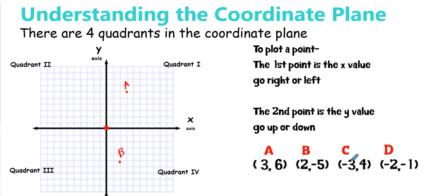Point C is (-3, 4). Start at the origin. Negative three means go this direction — negative numbers go this way on the number line — so one, two, three to the left. Then positive four means up: one, two, three, four. That's my C value. And then point D is (-2, -1). Go negative two: one, two. And negative one, which is down — right there. So that's D.